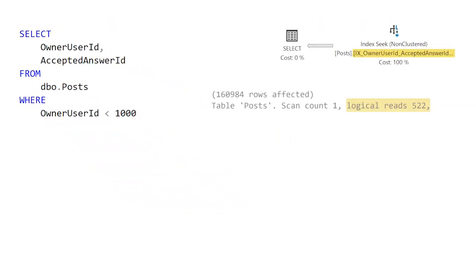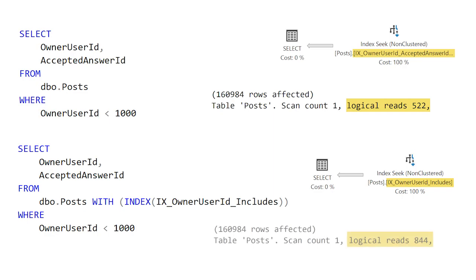However, because we're forcing that old index with all the columns included in it, the query is not as efficient as it could be — it could have otherwise used this newer index with fewer columns and we would have had fewer reads. This is just one example of how an index hint might negatively impact a query down the road. In this example, it was just the difference between one index being more data dense than the other, so the number of logical reads was different.